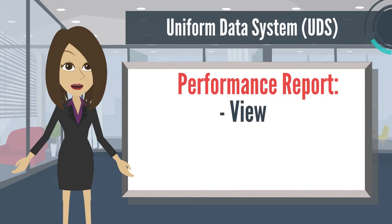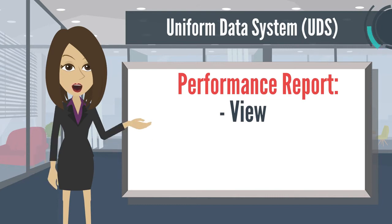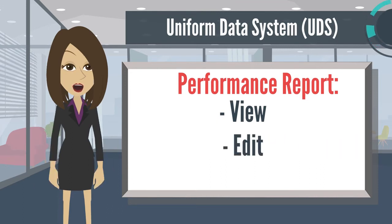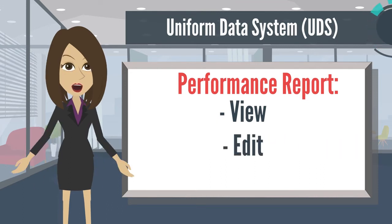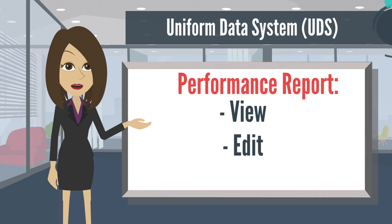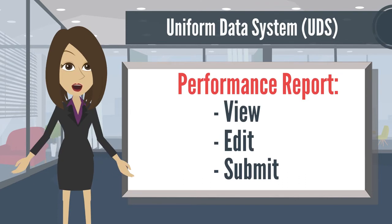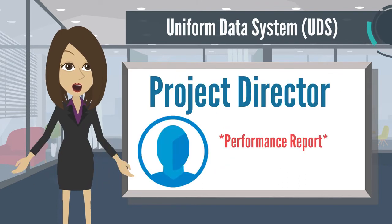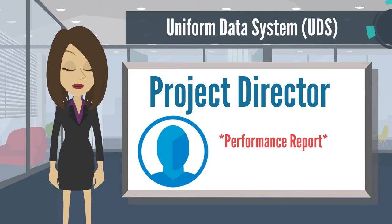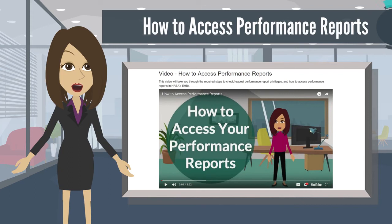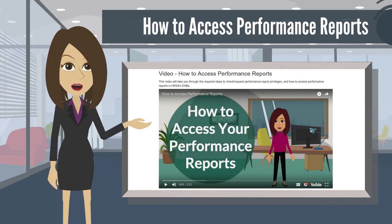The view privilege will allow you to view in-progress and submitted UDS performance reports in a read-only format. The edit privilege will allow you to edit UDS performance reports that have not been submitted to HRSA and the deadline has not passed. The submit privilege will allow you to submit a completed UDS performance report to HRSA. If you do not have the appropriate privileges to view, edit, or submit the UDS performance report, reach out to your project director associated with the grant or designation to obtain privileges, or you can watch a video to find out how to request performance report privileges within the EHB.